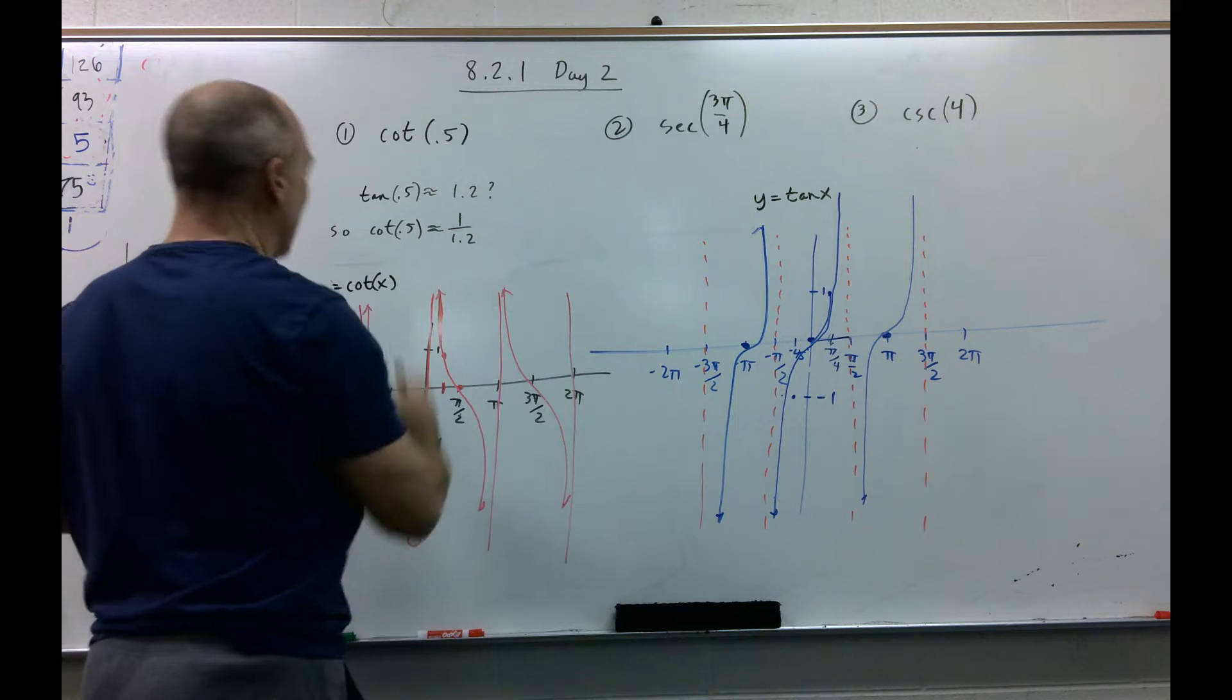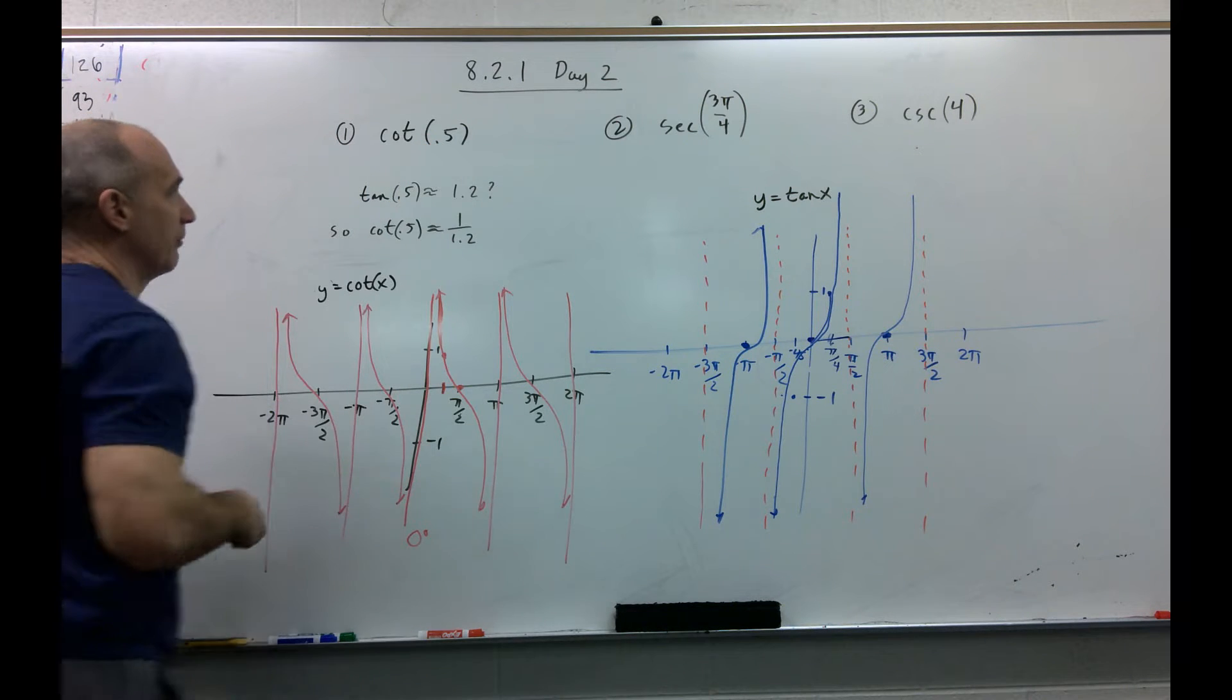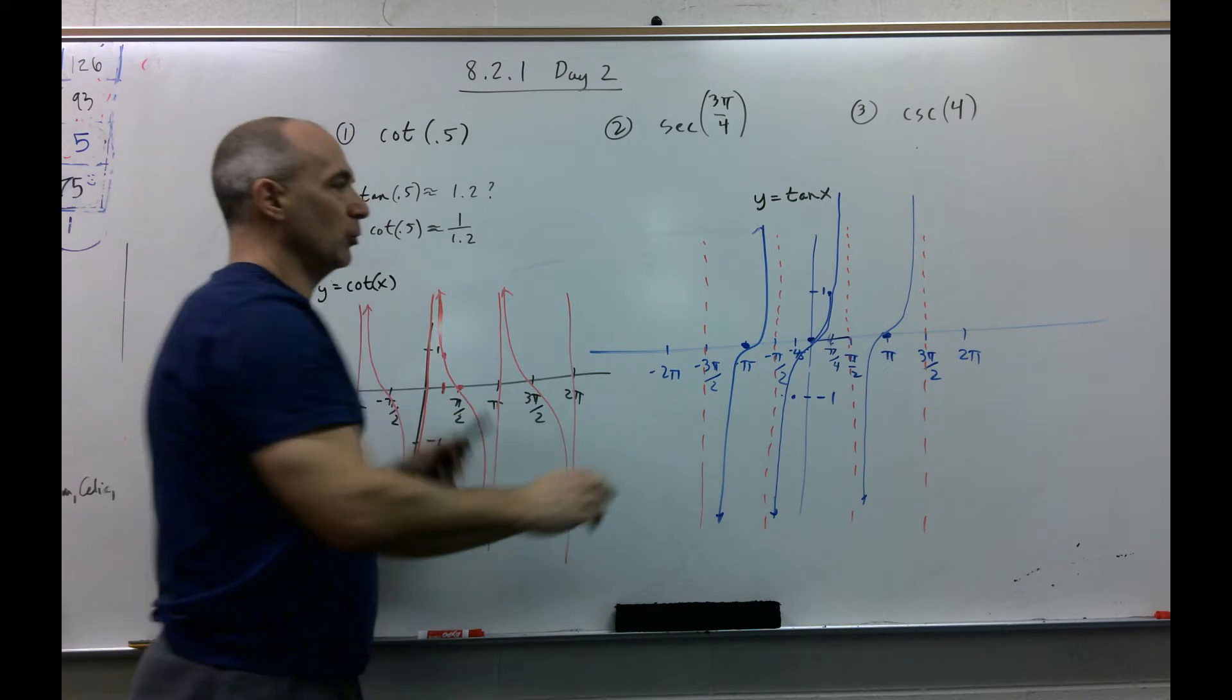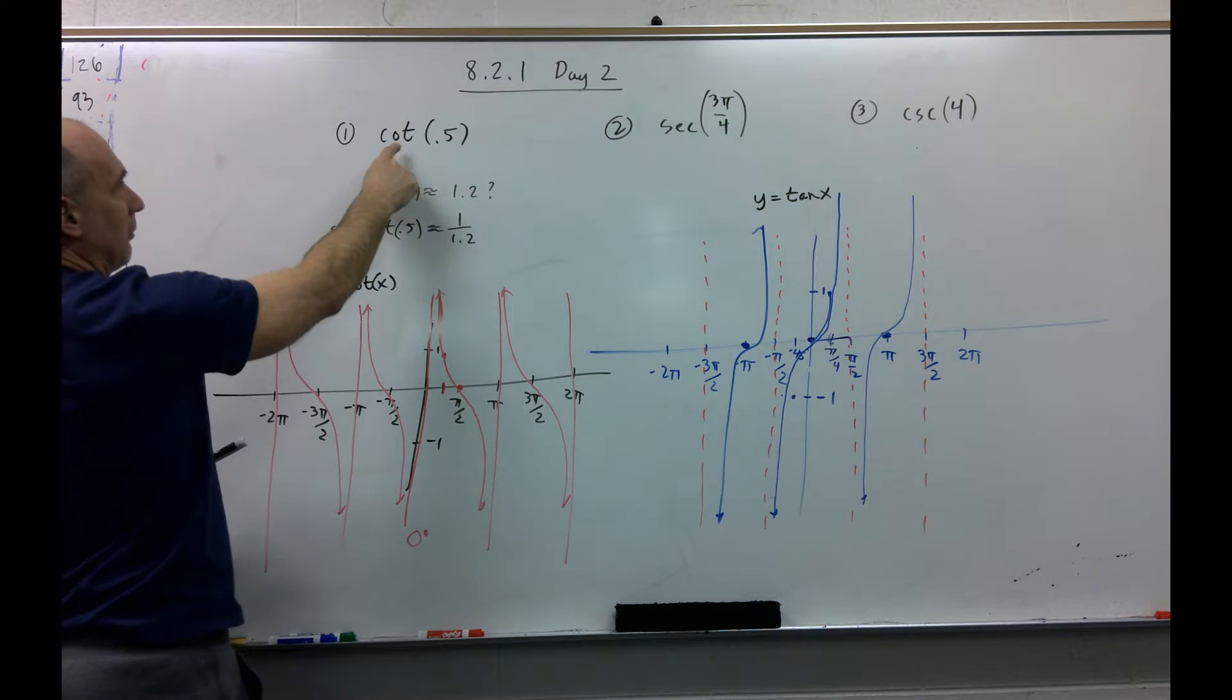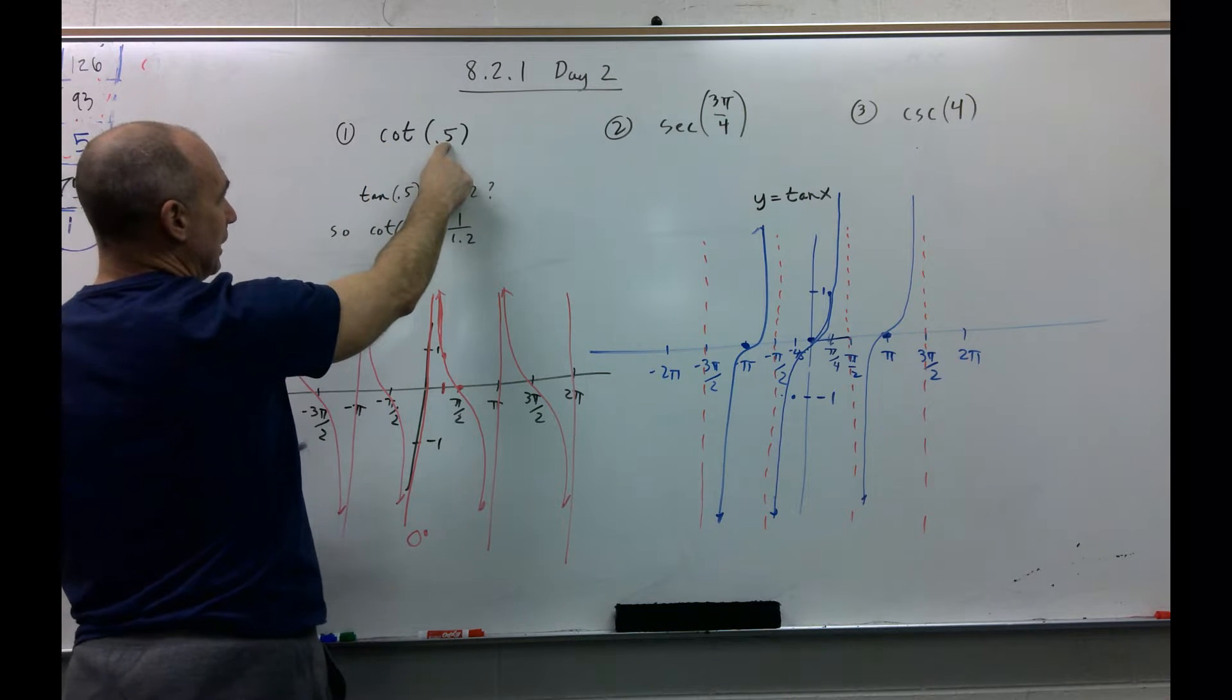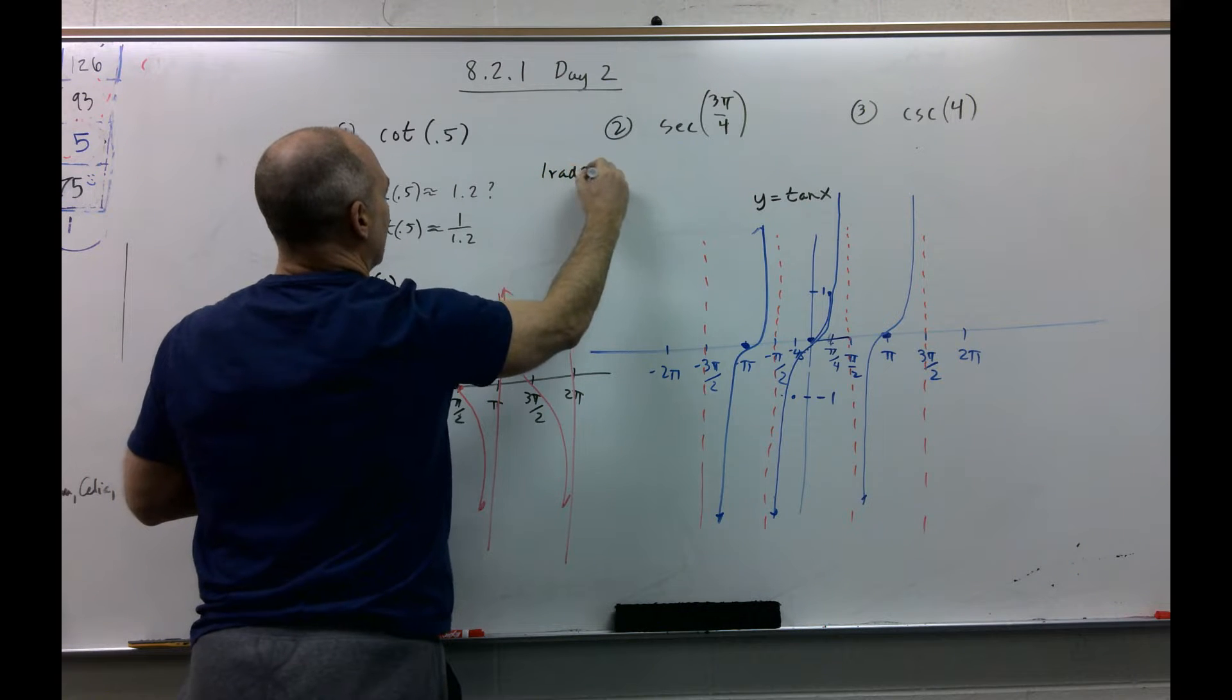So, the problem is asking us, how do you find cotangent of 0.5? Well, again, what I'm about to show you, you can kind of put on the shelf, but I want to show you something. We know that cotangent is the reciprocal of tangent, so if we can find tangent of 0.5 radians...